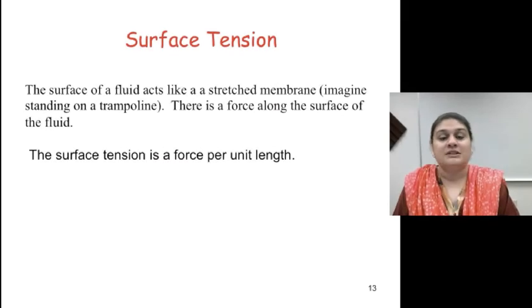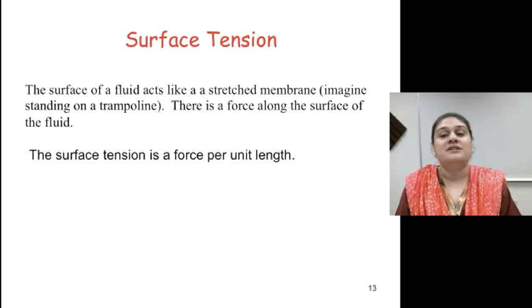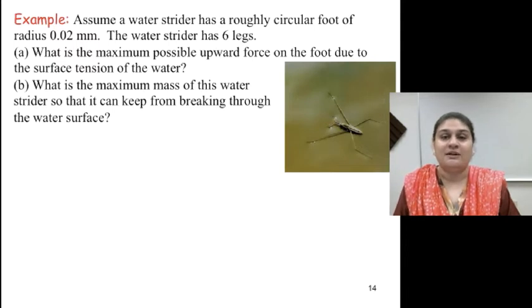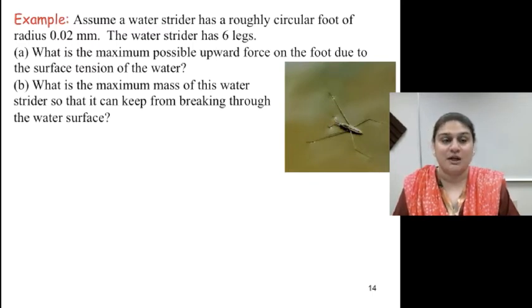Surface tension. The surface of a fluid acts like a stretched membrane. Imagine standing on a trampoline, and when you're dragging it, it kind of stretches. There is a force along the surface of the fluid. So surface tension is a force per unit length. Here's another very interesting question. Assume a water strider has roughly a circular foot of radius 0.02 millimeter. The water strider has six legs. What is the maximum possible upward force on the foot due to the surface tension of the water? And what is the maximum mass of this water strider so it can keep from breaking through the water surface?